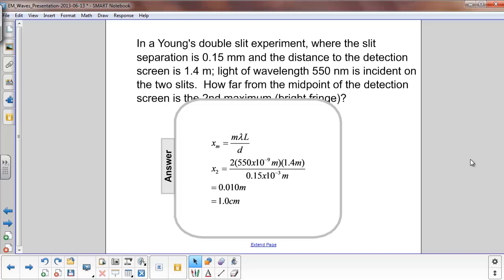The screen is 1.4 meters away and the distance millimeters, that would be 10 to the minus 3 meters, between the slits. We carry out the math and we get 1.0 centimeters.